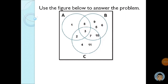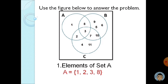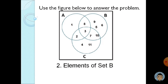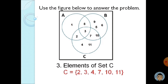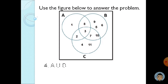This time, let's use the figure below to answer the problem. There are three sets given: set A, set B, and set C. The elements of set A are 1, 2, 3, and 8 — dapat nasa set A lang. For elements of set B, check all the elements na nasa loob ni set B: 3, 5, 6, 7, 8, 9, and 10. For elements of set C, we have 2, 3, 4, 7, 10, and 11 — nasa loob ng set C.